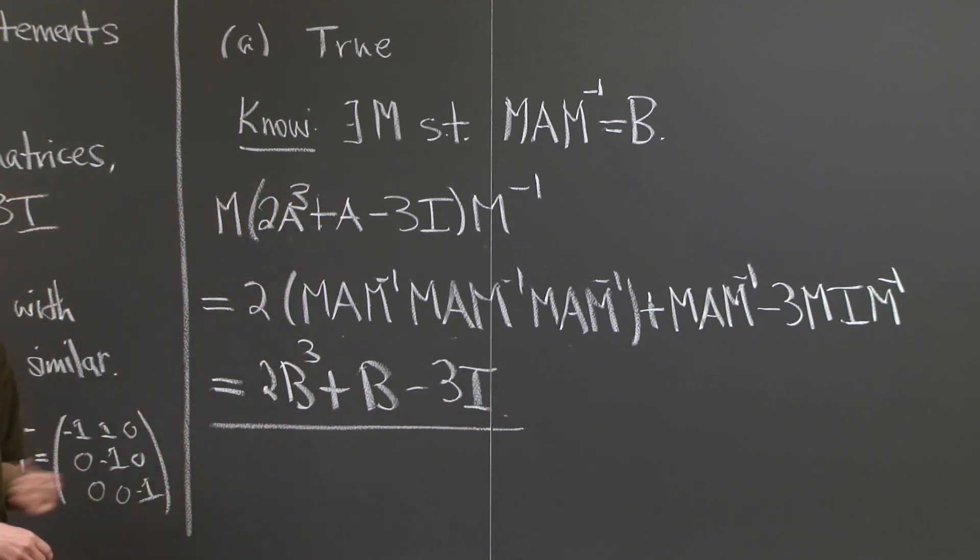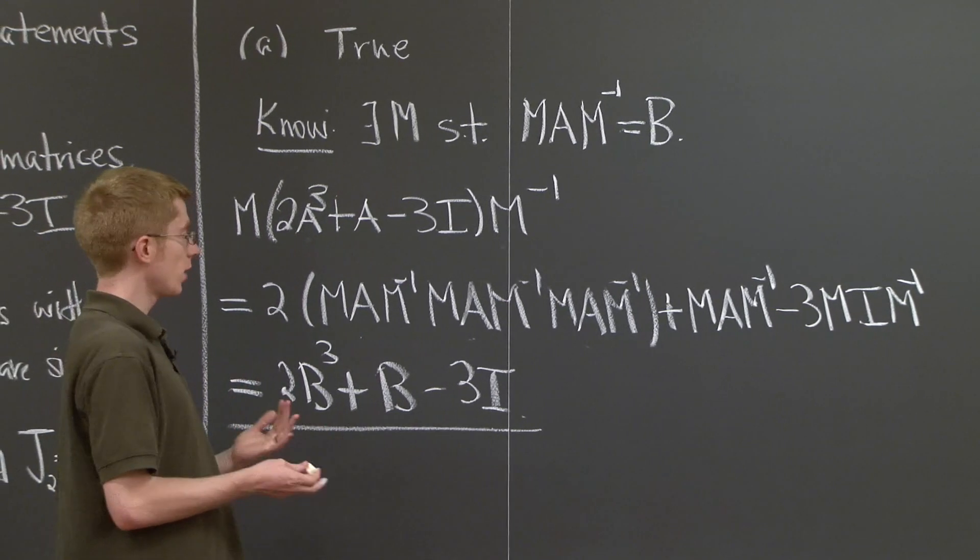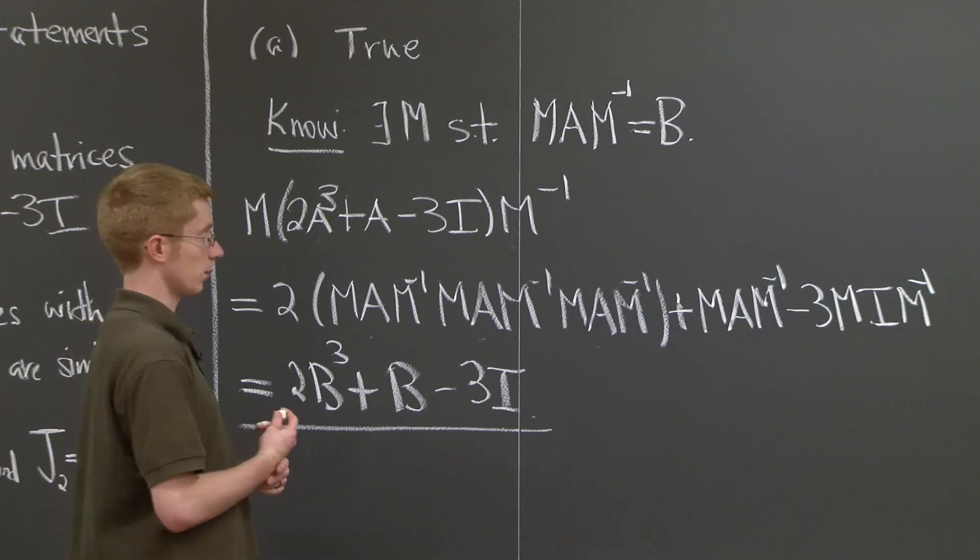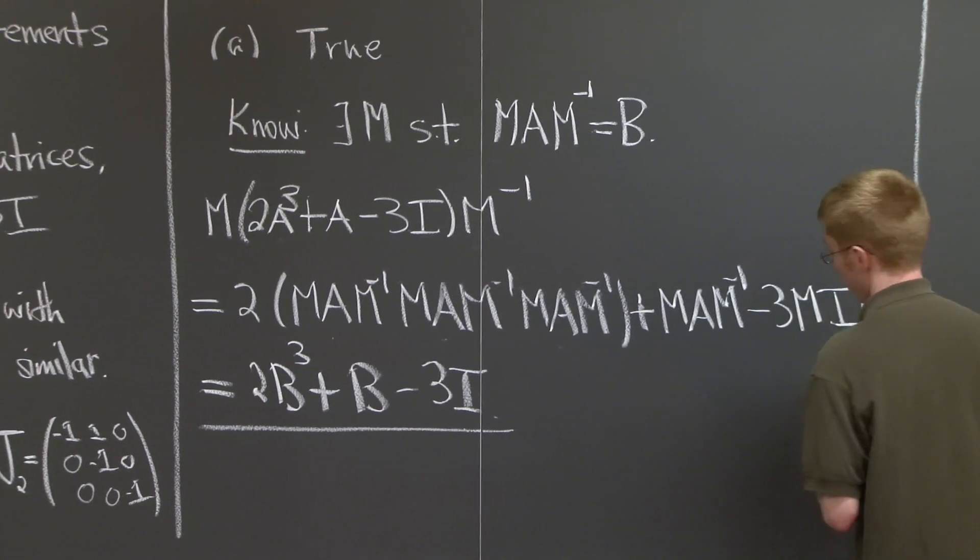And this is sort of a general remark that if you have matrices A and B that are similar, then any polynomials in these matrices A and B will be similar. It's the exact same justification.